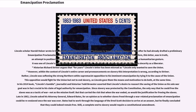Historian Richard Streiner argues that for years Lincoln's letter has been misread as showing Lincoln only wanted to save the Union. However, within the context of Lincoln's entire career and pronouncements on slavery this interpretation is wrong. Rather, Lincoln was softening the strong Northern white supremacist opposition to his imminent emancipation by tying it to the cause of the Union. This opposition would fight for the Union but not to end slavery, so Lincoln gave them the means and motivation to do both at the same time. In his 2014 book 'Lincoln's Gamble,' journalist and historian Todd Brewster asserted that Lincoln's desire to reassert saving the Union as his sole war goal was in fact crucial to his claim of legal authority for emancipation, since the only way he could free the slaves was as a tactic of war, not as the mission itself.